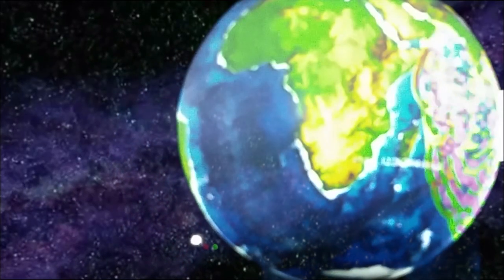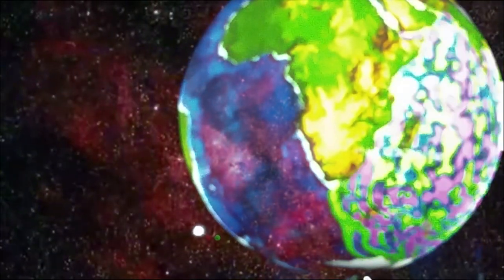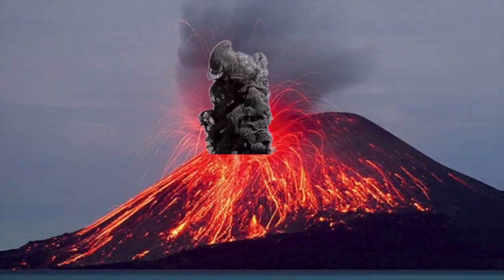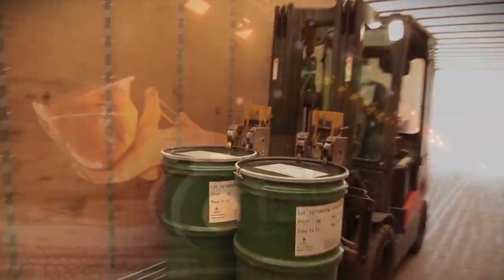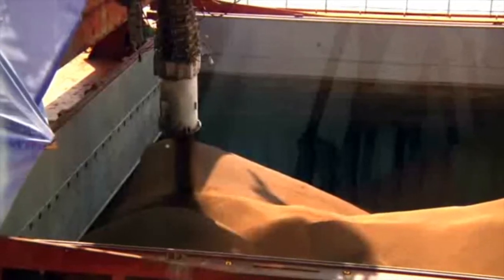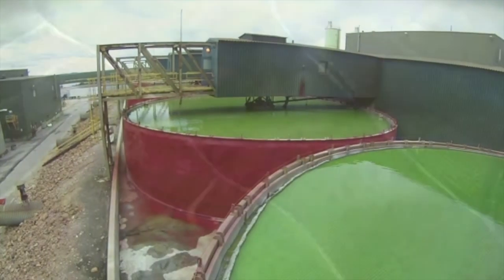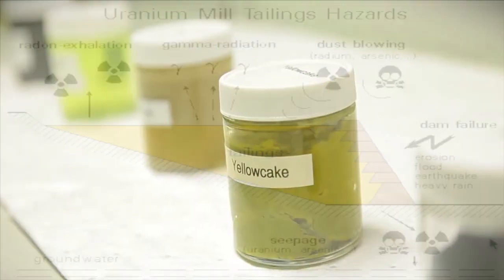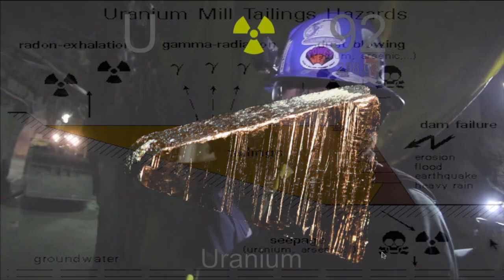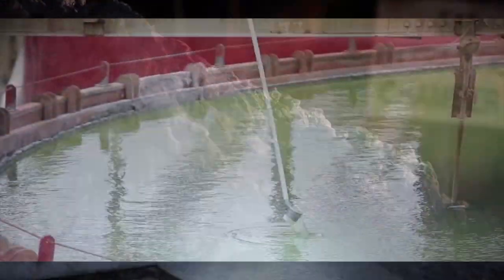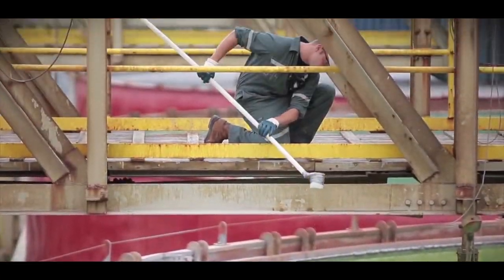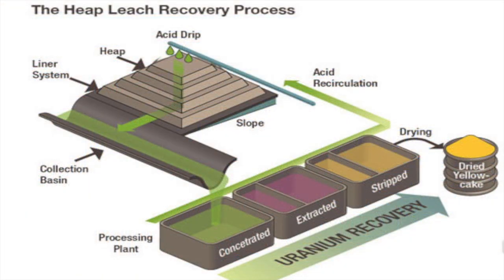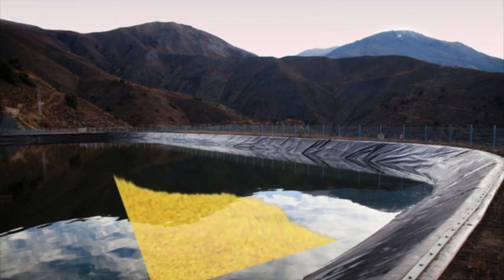Uranium is redistributed on the earth by various natural and industrial processes. Natural processes include weathering, volcanic eruption, and wind and water erosion. Industrial processes include uranium mine tailing disposal, extraction of phosphorus from phosphate ores to produce phosphate fertilizers, and uranium mining and milling to produce uranium oxides. In mining, raw uranium ore is brought to the surface and crushed into a fine sand. The valuable uranium-bearing materials are then removed via heap leaching with acids or bases. The remaining radioactive sludge, called uranium tailings, is stored in large impoundments.